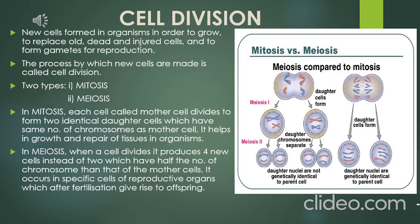In meiosis, when a cell divides it produces four new cells instead of two, which have half the number of chromosomes of the mother cell. Meiosis occurs in specific cells of reproductive organs and after fertilization gives rise to offspring. This type of division occurs in sexual reproduction, where half the chromosomes come from one parent and half from another. Mitosis, by contrast, occurs in asexual reproduction.